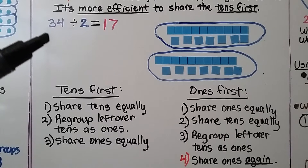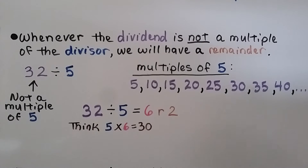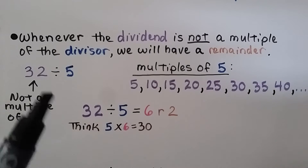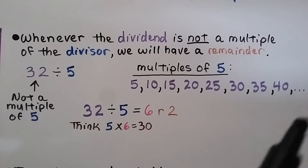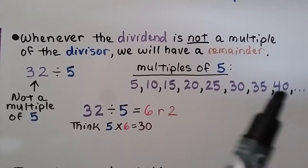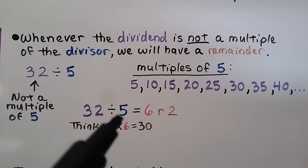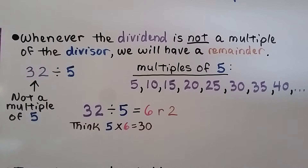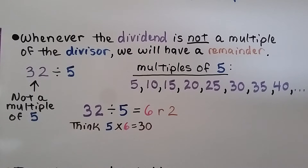34 divided by 2 equals 17 — we have 17 in each group. Whenever the dividend is not a multiple of the divisor, we will have a remainder. For 32 divided by 5: the multiples of 5 are 5, 10, 15, 20, 25, 30, 35 — 32 is not a multiple of 5. We know 5 times 6 equals 30, so 32 divided by 5 equals 6 remainder 2.